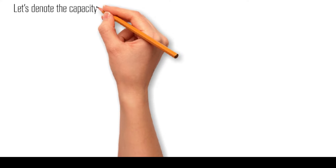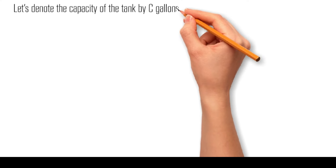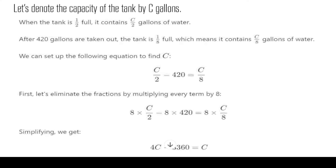Let's denote the capacity of the tank by C gallons. When the tank is one-half full, it contains C over two gallons of water. After four hundred and twenty gallons are taken out, the tank is one-eighth full, which means it contains C over eight gallons of water. We can set up the following equation to find C: C over two minus four hundred and twenty equals C over eight.